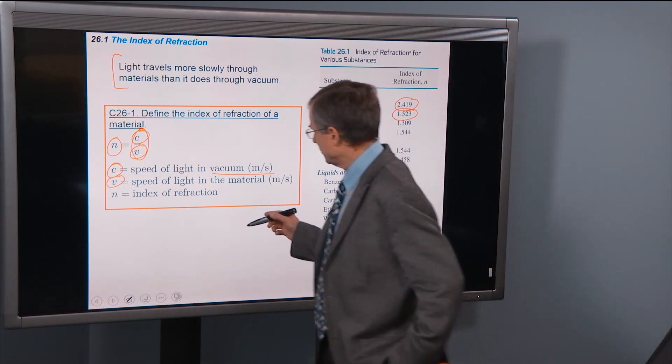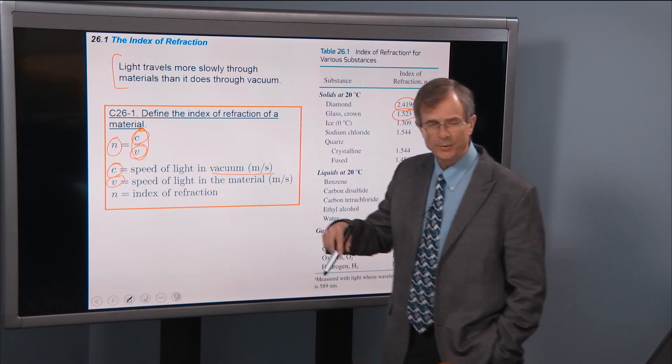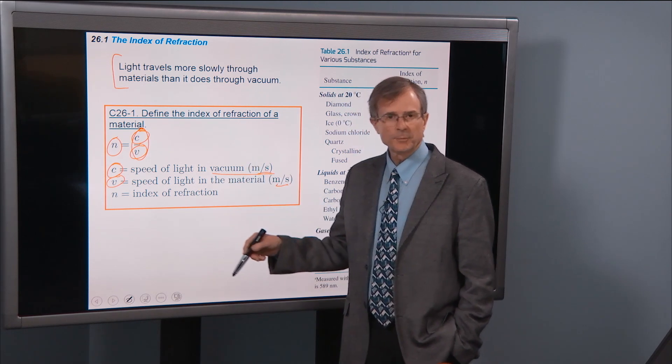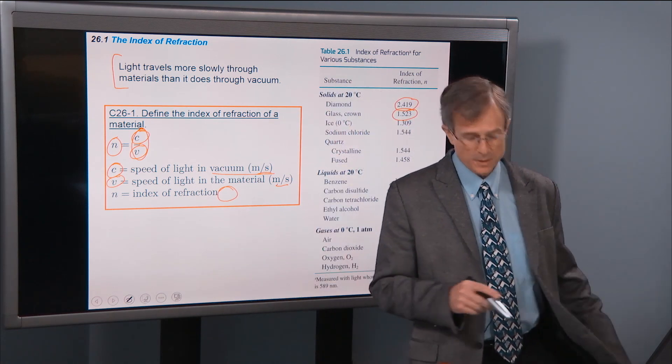And index of refraction, notice here that we're dividing one speed, C, by another speed, V, both of them measured in meters per second. And so you end up with an index of refraction that has no units at all. It's just a unitless number.